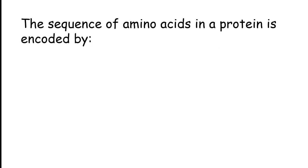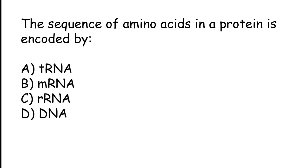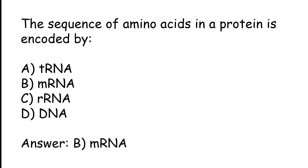The sequence of amino acids in a protein is encoded by: tRNA, mRNA, rRNA, DNA. The correct answer is option B: the sequence of amino acids in a protein is encoded by mRNA.